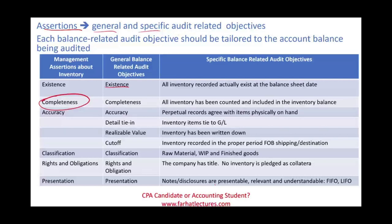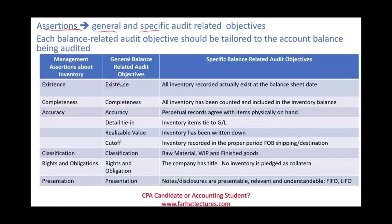Completeness could be addressed by asking management: did you provide us with all the inventory? If they say yes and we have no reason to question this, we're done with completeness — unless there are steps we need to undertake. If we believe they're hiding some inventory, we carry more steps. Usually completeness is not the biggest issue for inventory; it's usually existence or rights and obligation. What's more important depends on the account being audited, which you'll learn about later in the inventory and purchasing cycle.